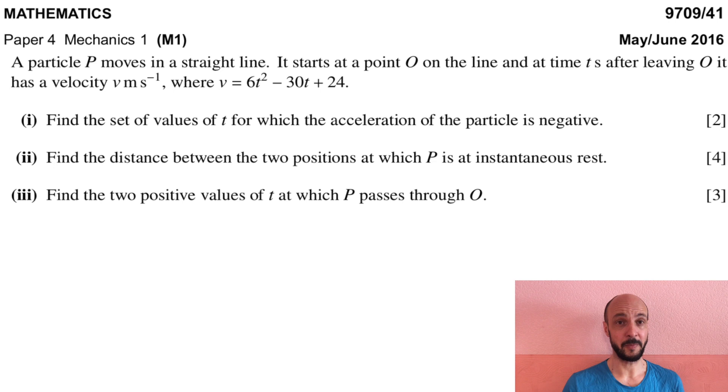We'll start by reading through the question. A particle P moves in a straight line. It starts at point O on the line and at time t seconds after leaving O it has a velocity v metres per second where v equals 6t squared minus 30t plus 24.